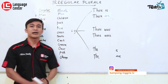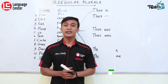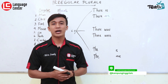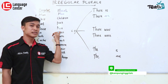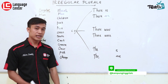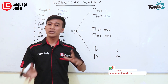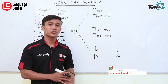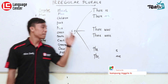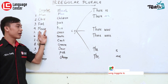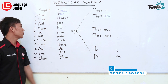Yang keempat adalah 'mouse'. Mouse, kita tahu semua — tikus. Kalau tikusnya banyak, bukan 'mouses', tapi dia berubah menjadi 'mice'. Ketika 'mice', otomatis dia adalah jumlah tikus yang lebih dari satu. Tidak ada 'mouses'. Mouse itu tunggal, mice itu bentuk plural atau lebih dari satu.